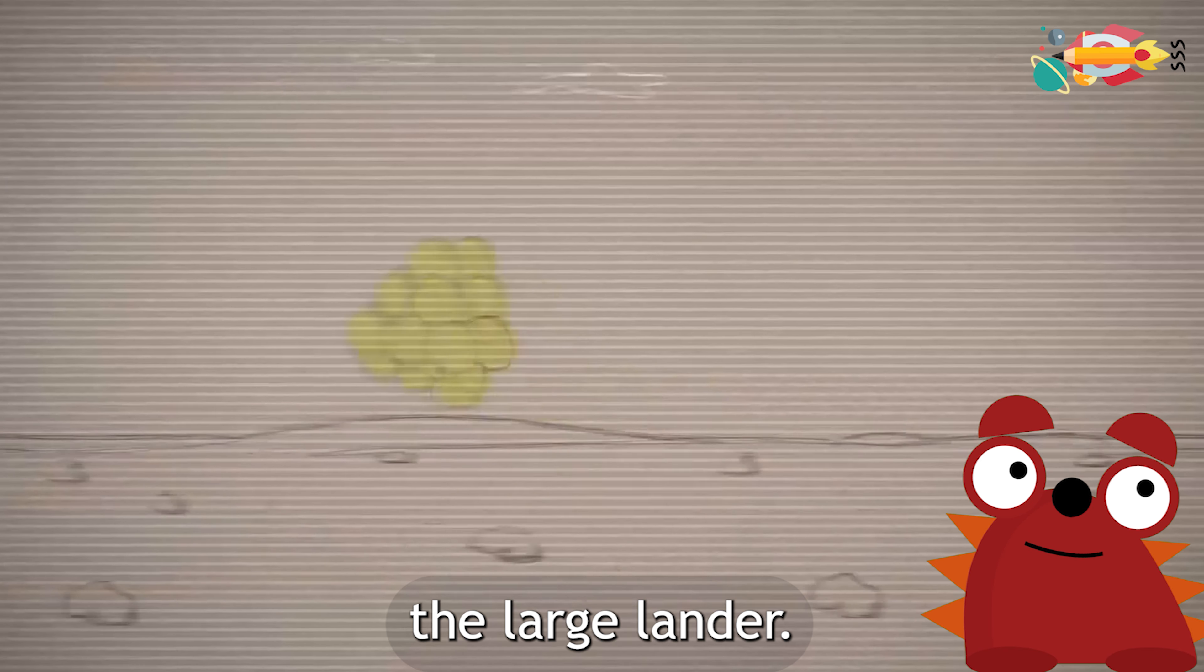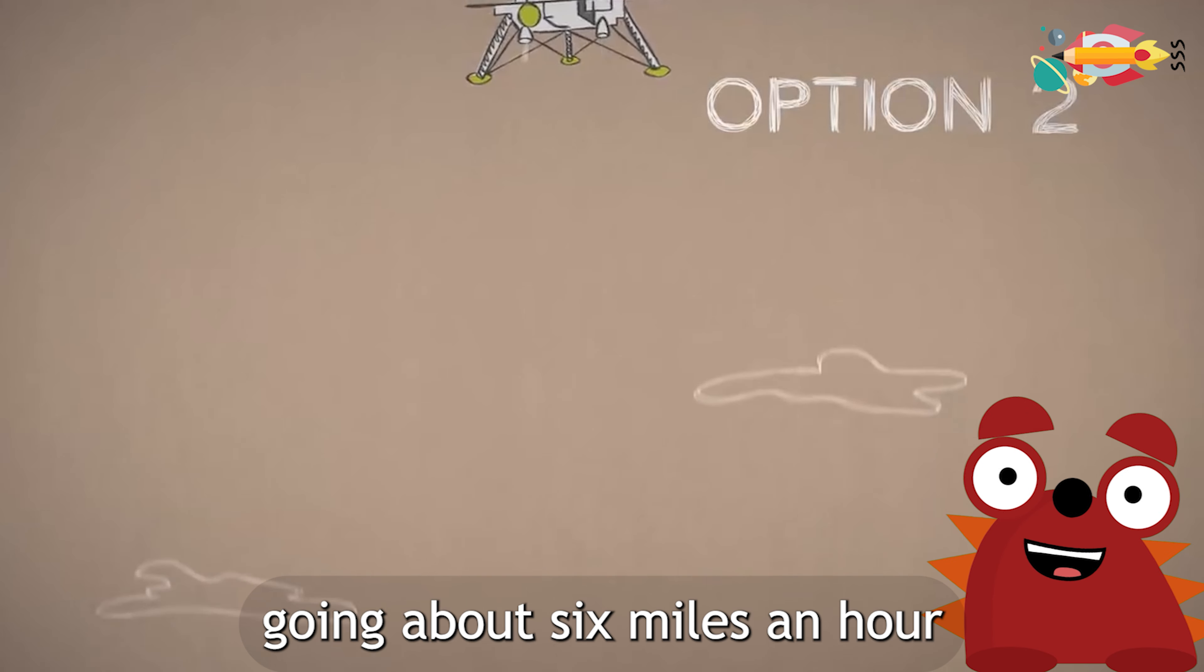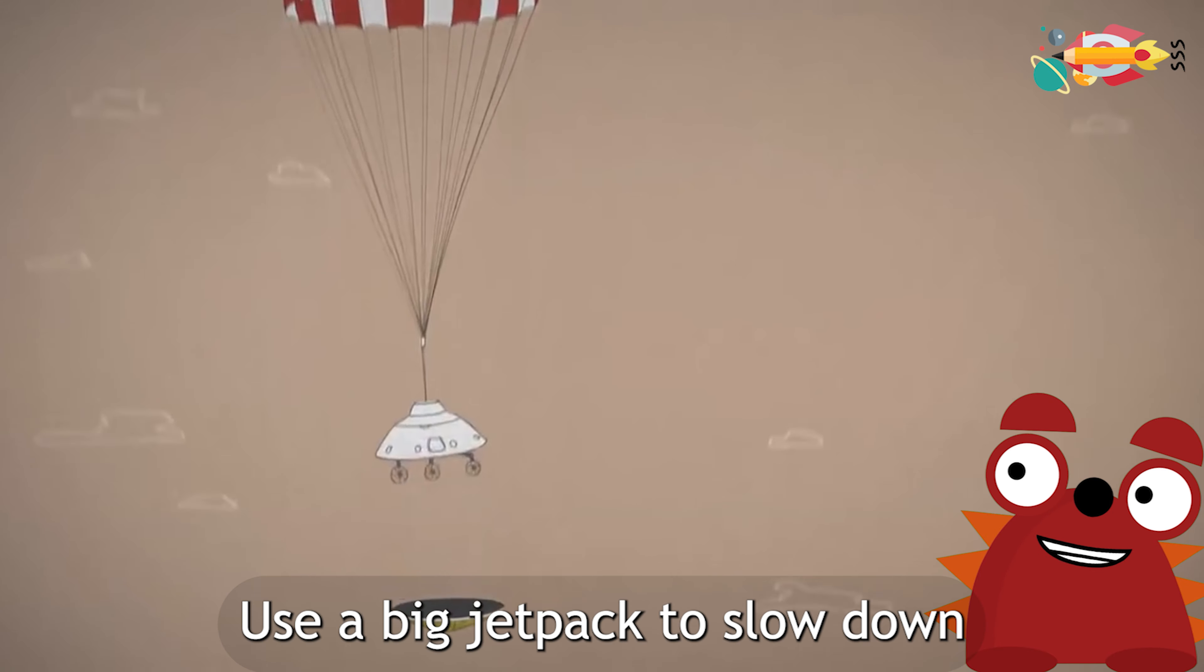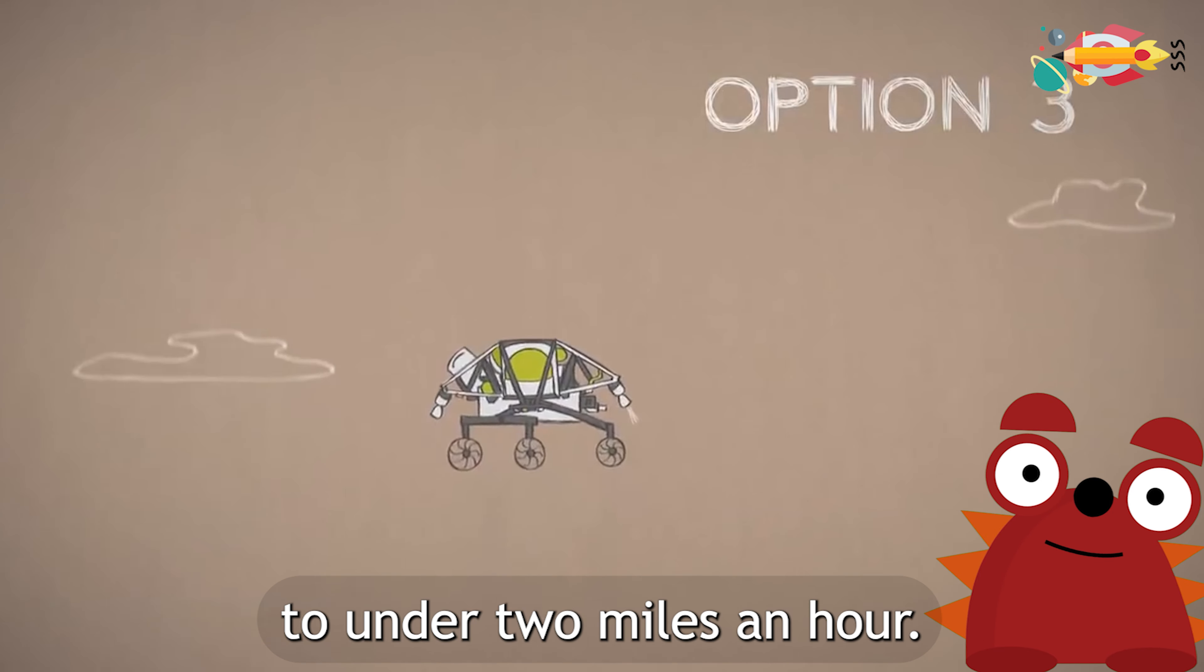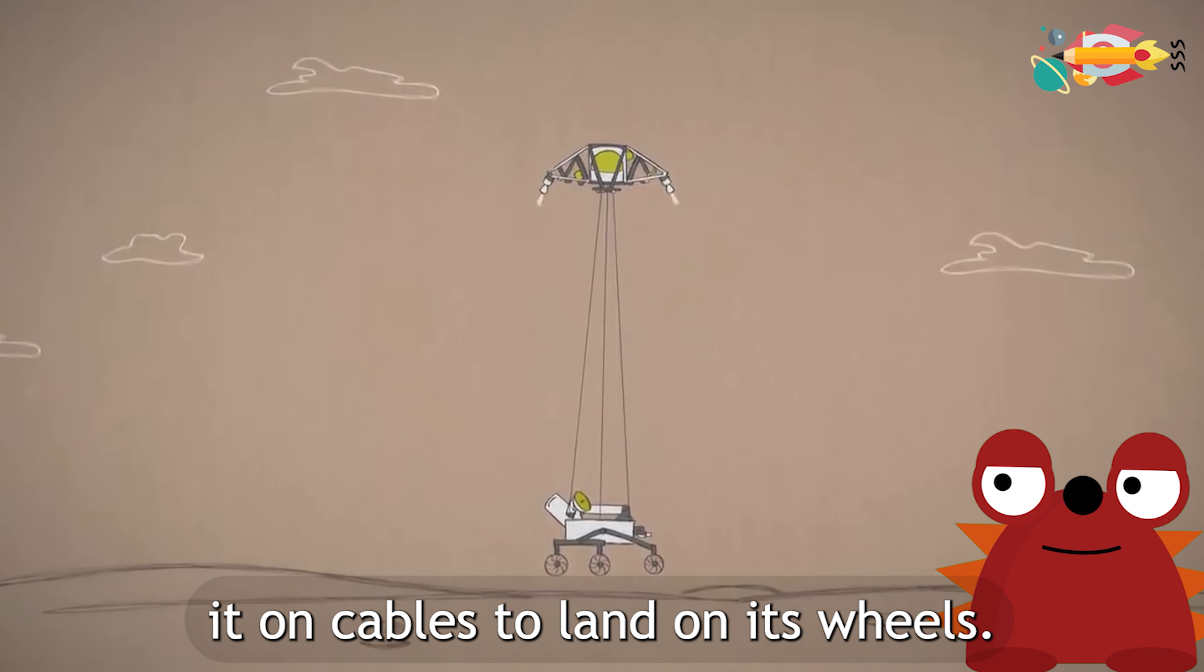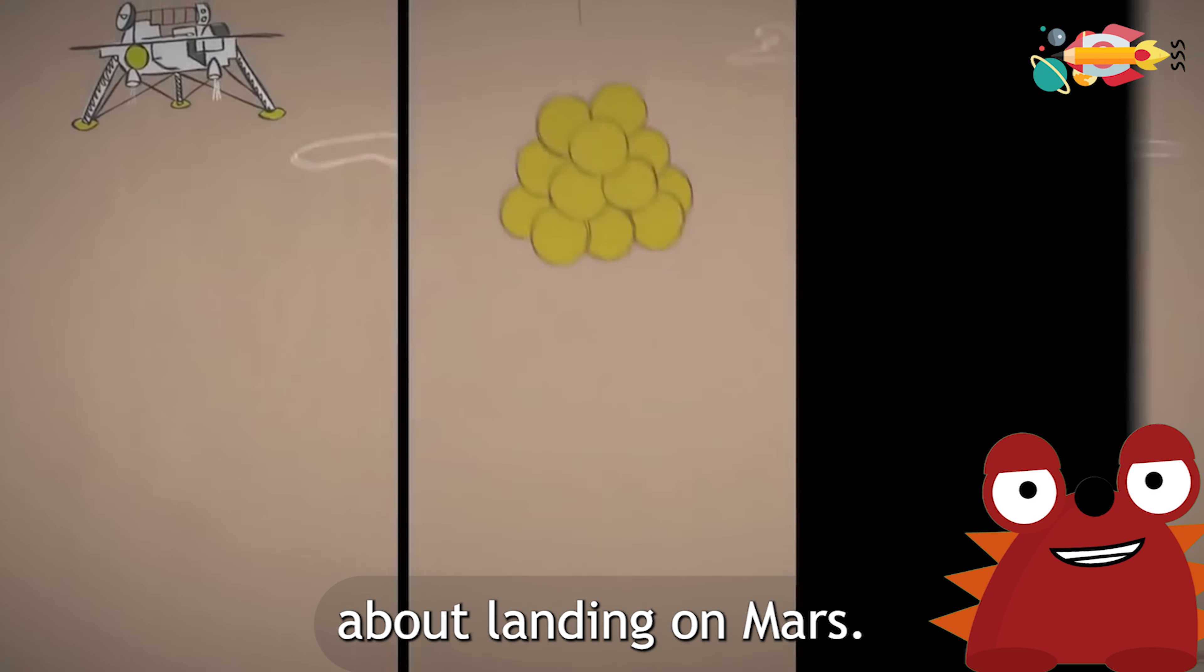For a large lander, use retro rockets and landing legs to touch down going about six miles an hour. Or, with a large heavy rover, use a big jetpack to slow down to under two miles an hour. Then, gently lower it on cables to land on its wheels. Any way you do it, you'll need skill and hard work. There's nothing easy about landing on Mars.